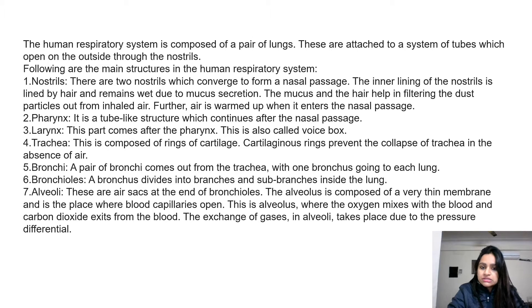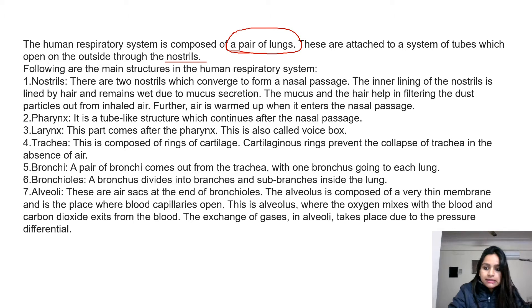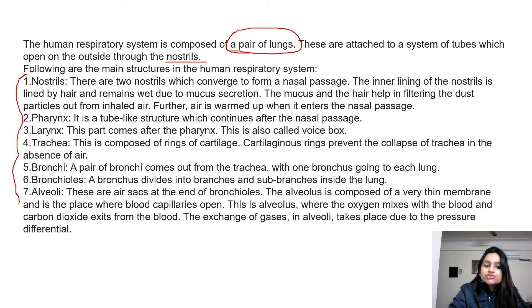The human respiratory system is composed of a pair of lungs. These are attached to a system of tubes which open on the outside through nostrils. You will need to remember all these structures, and you need to go through the diagram which I will explain in the next slide.